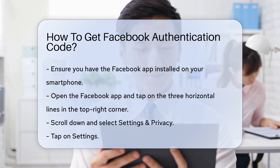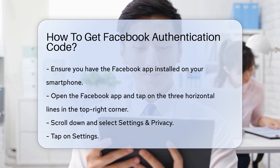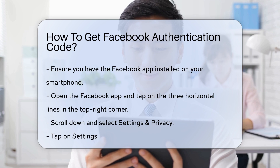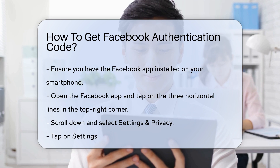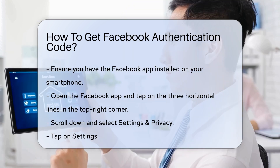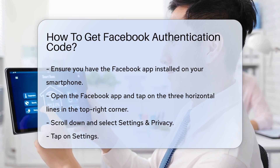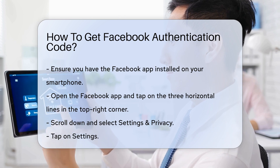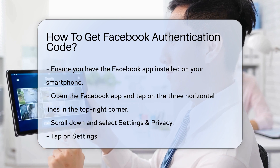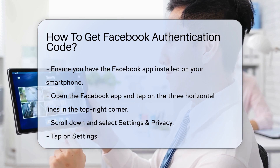Open the Facebook app and tap on the three horizontal lines in the top right corner. Scroll down and select Settings and Privacy. Next, tap on Settings. Under the Security section, you will find the Security and Login option.